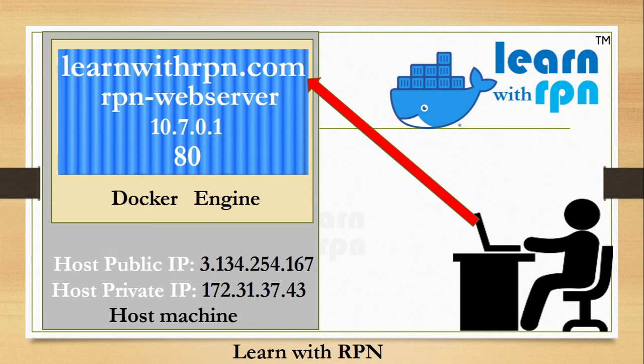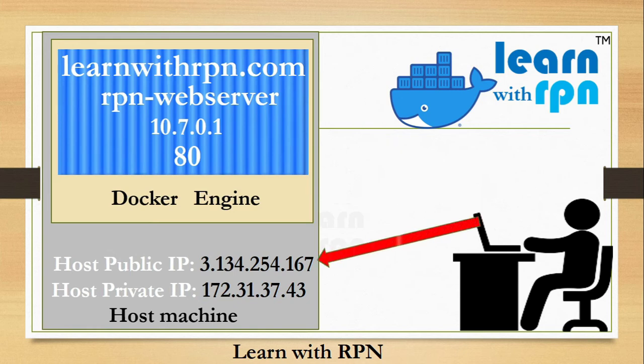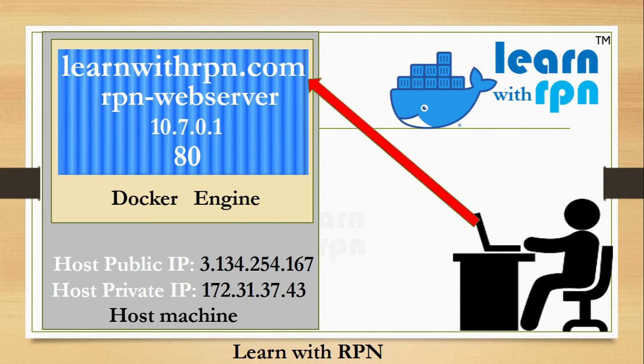We know the container is isolated from the host machine. This person needs the host's public IP, and by default this IP doesn't recognize this port. So how is it possible for him to access this website within the container?